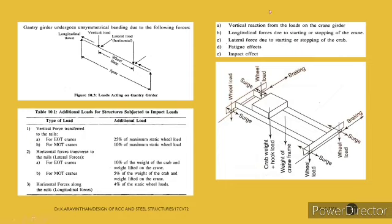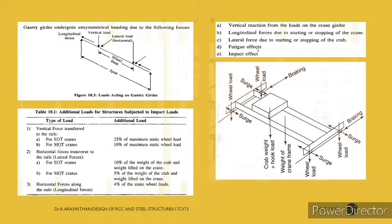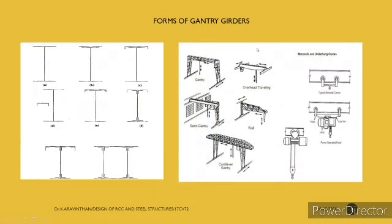The loads acting on a gantry girder are: vertical reaction from the crane girder load (due to crab dead weight and the hung load), longitudinal force due to starting and stopping of the crane, lateral force due to starting and stopping of the crab, impact load, and fatigue effect. These are the key forces to consider in gantry girder design.